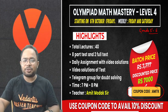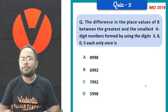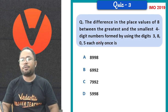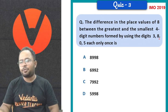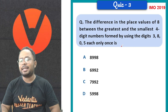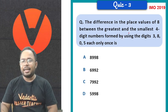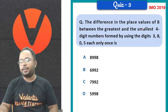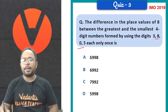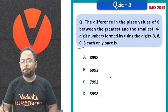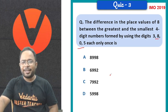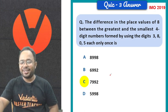Let us do another question now, students. The difference in the place value of 8 between the greatest and the smallest 4 digit numbers, formed by using the digits 3, 8, 0, 5 each only once, is what? Here is your answer 7992. Very wonderful, students.